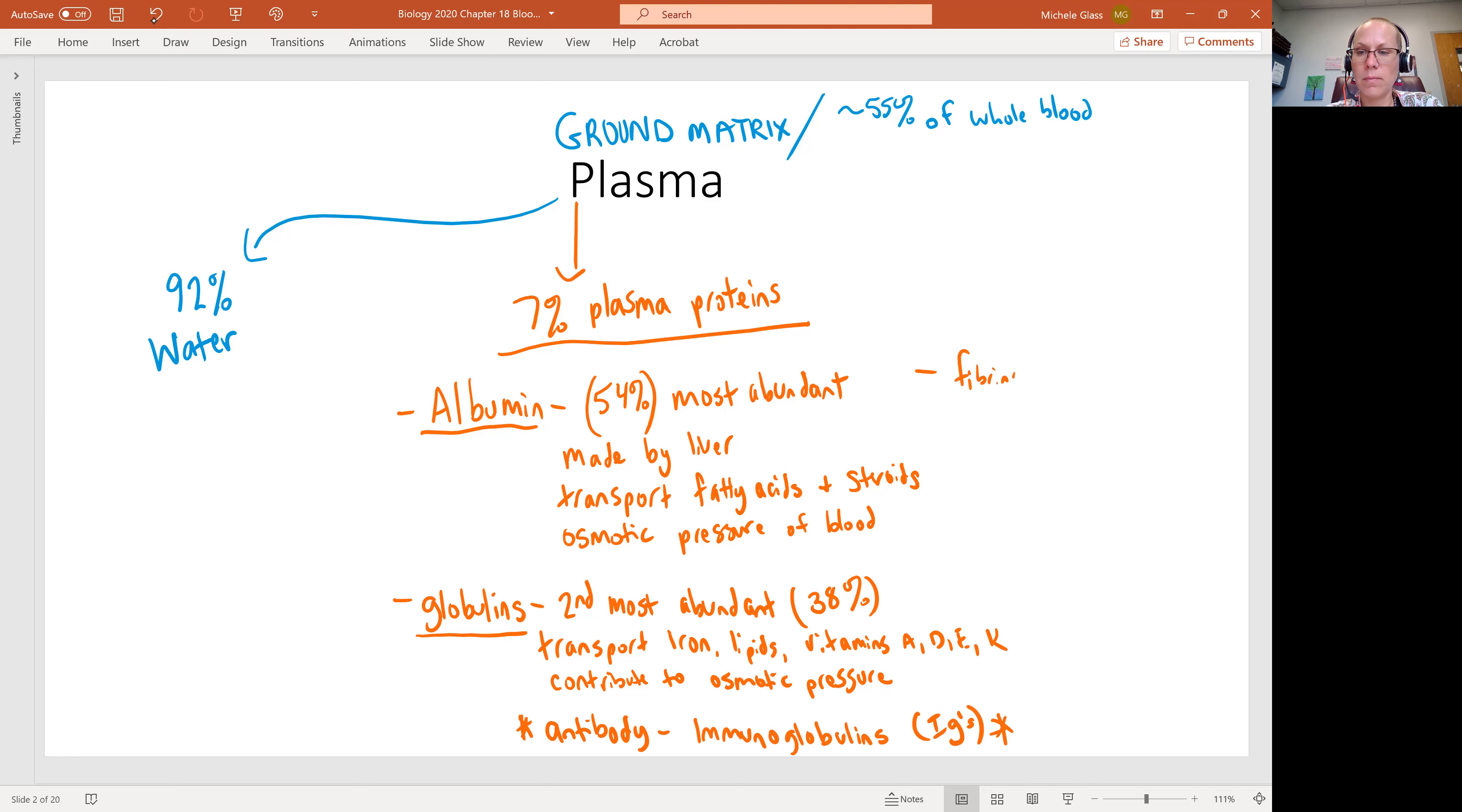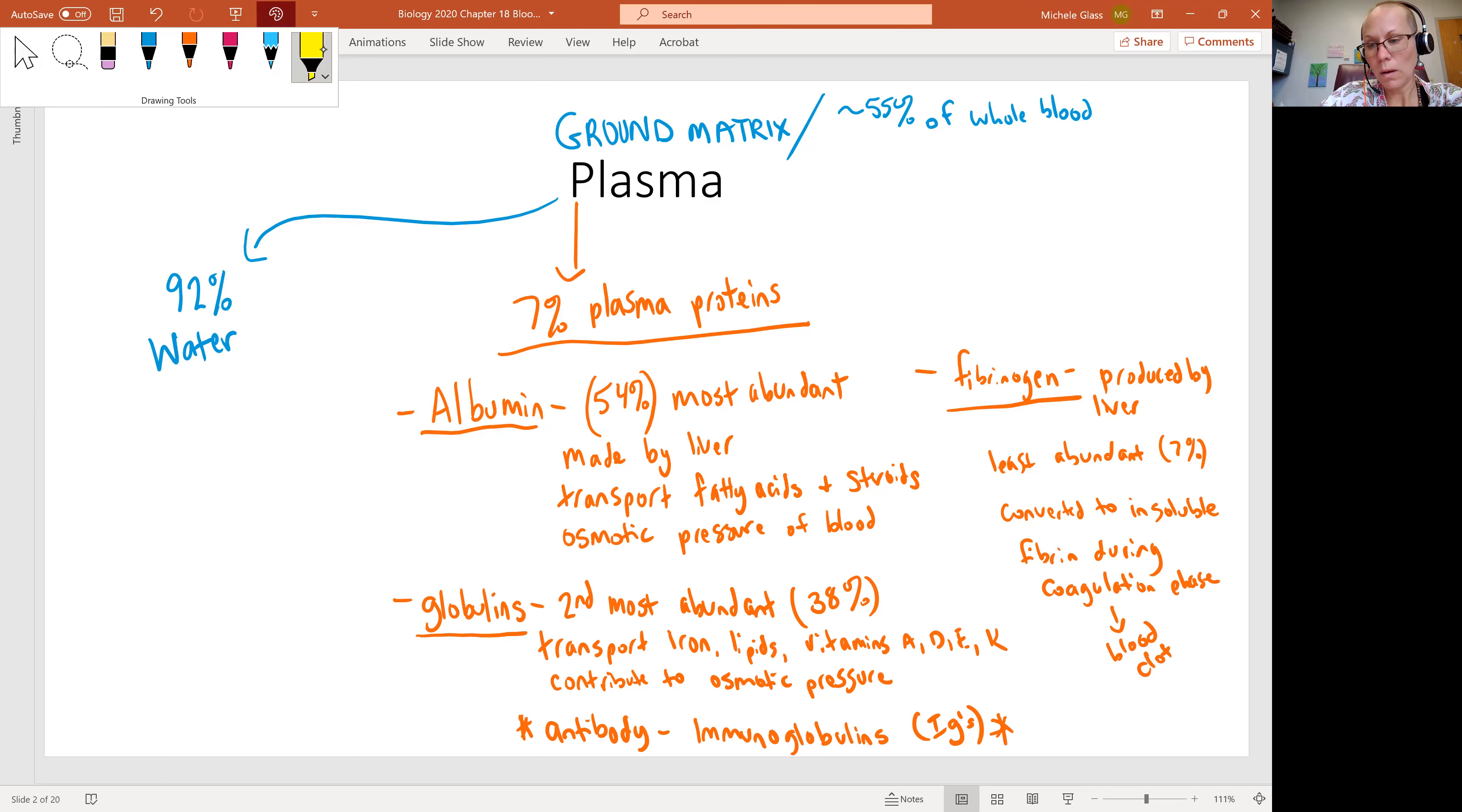We have a third plasma protein, which is fibrinogen. Fibrinogen is another one that's produced by the liver. It's the least abundant, only making up about 7% of the plasma proteins. Fibrinogen is soluble, but it will be converted to insoluble fibrin during what's called the coagulation phase, meaning it's important in making the blood clot, the actual structure called a blood clot. We'll be talking about fibrin and this coagulation phase in the future.